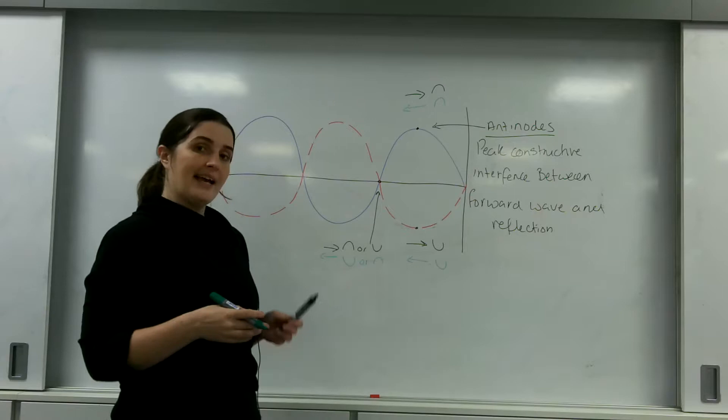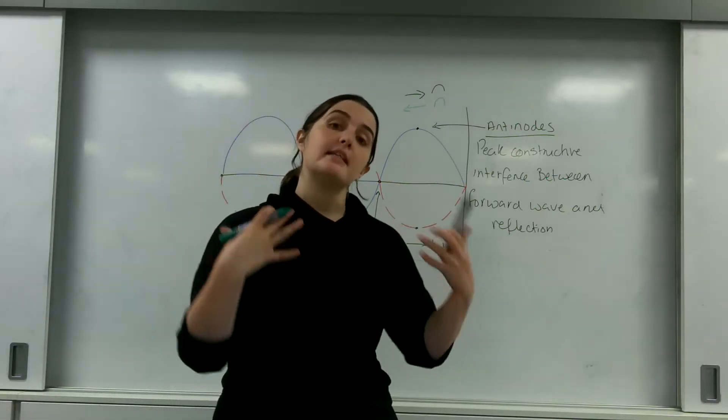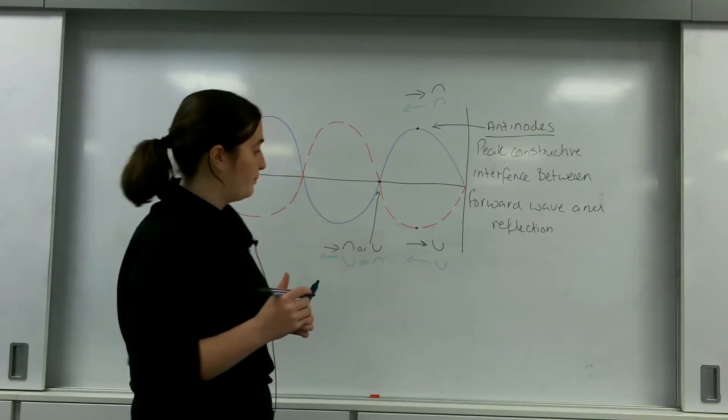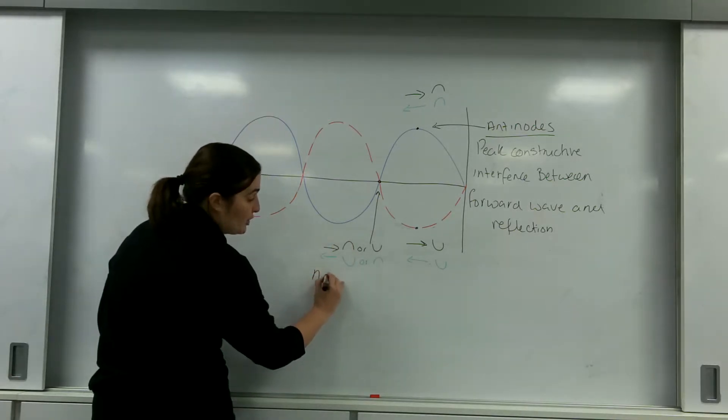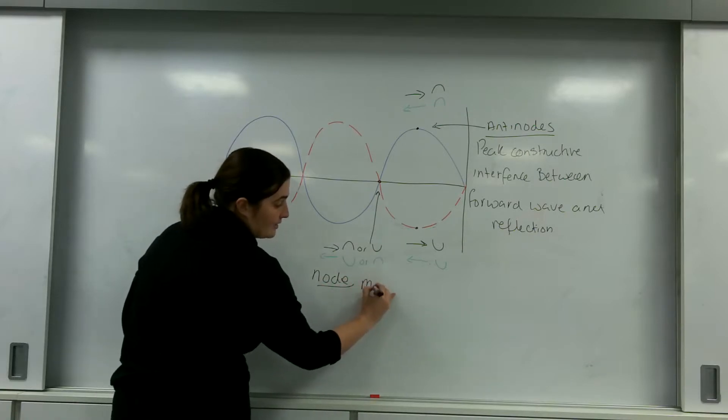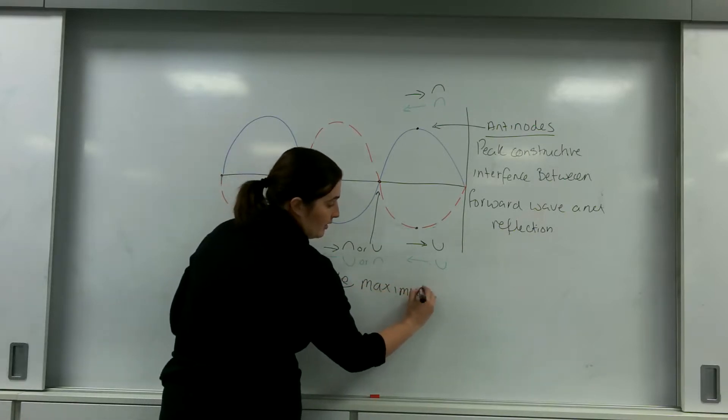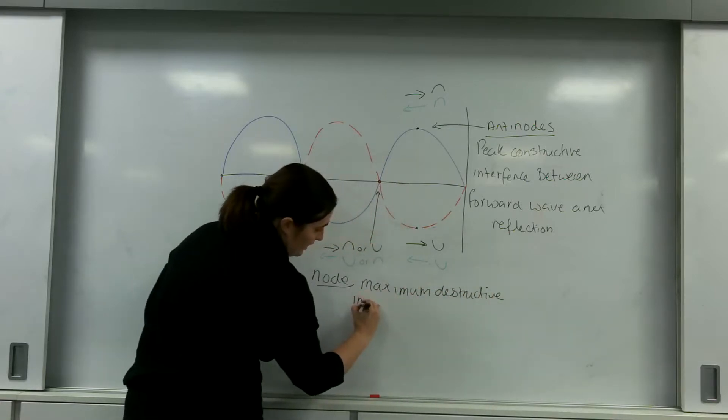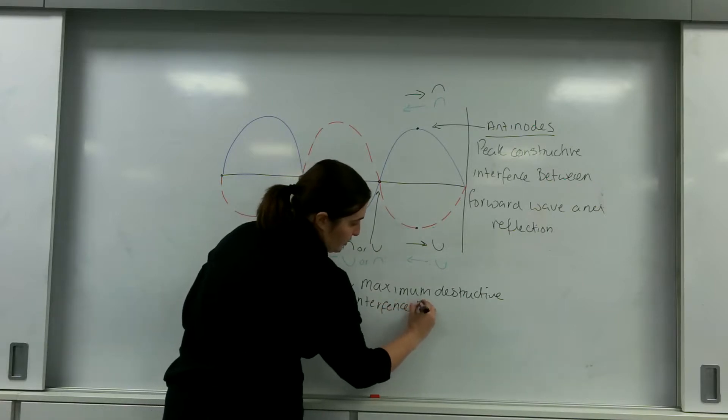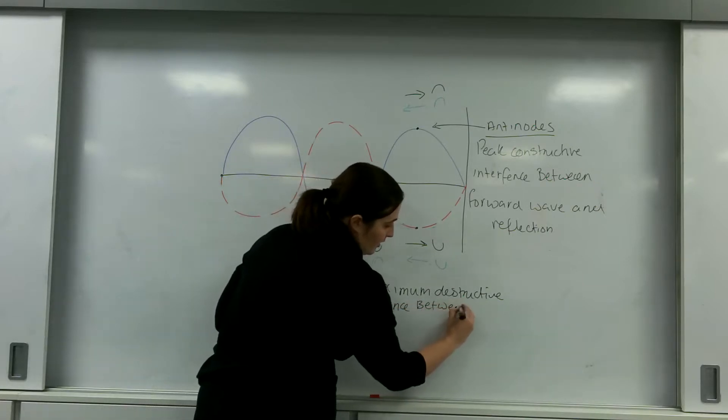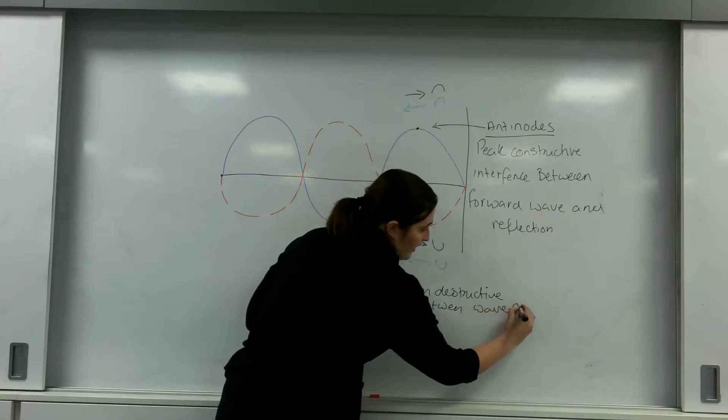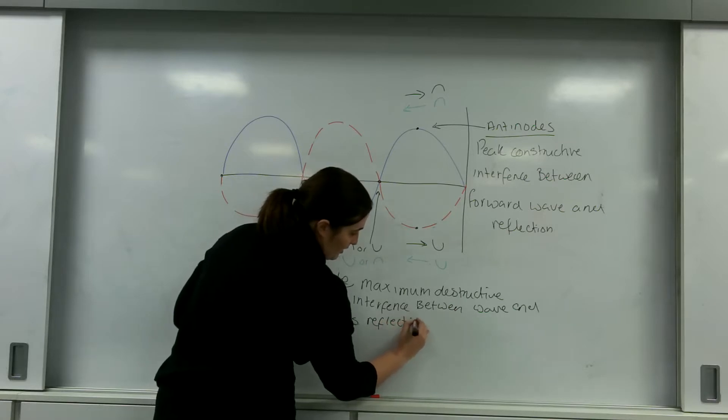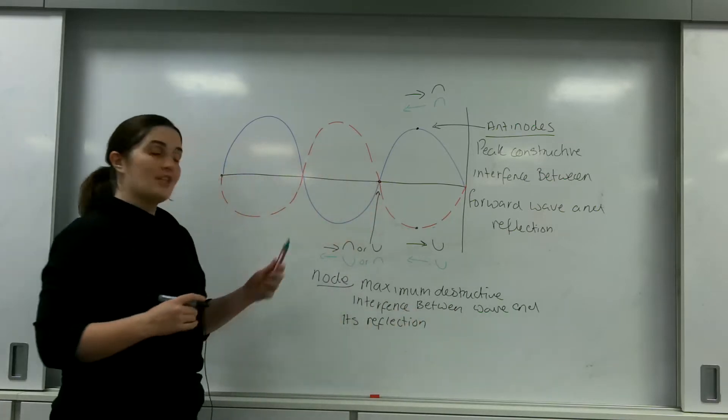Either way, they have maximum or peak destructive interference. This area is called a node. So a node has maximum destructive interference between the wave and its reflection.